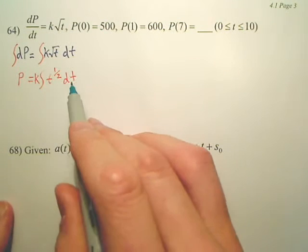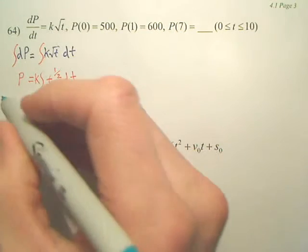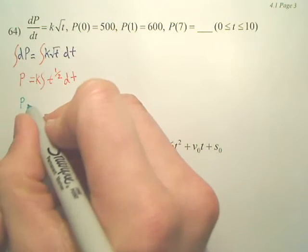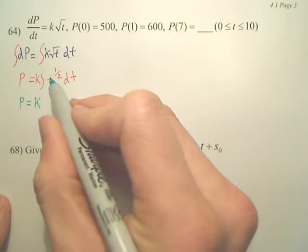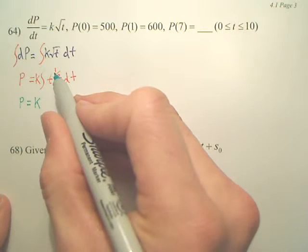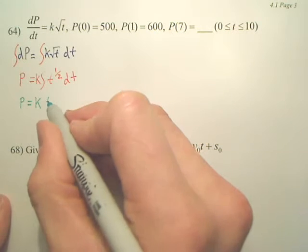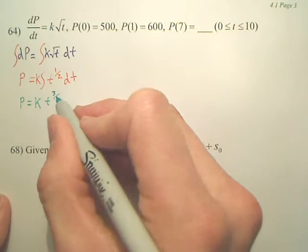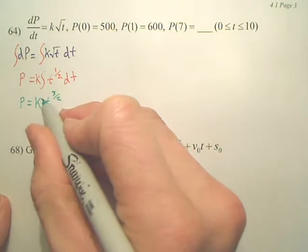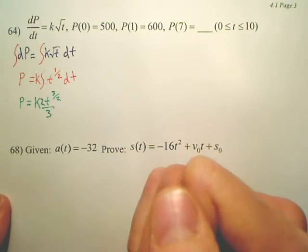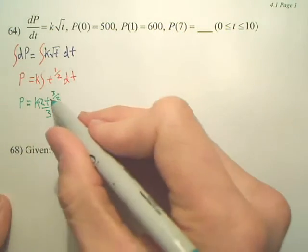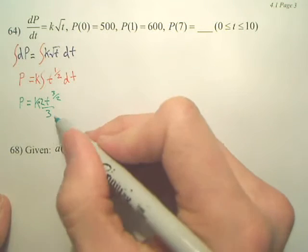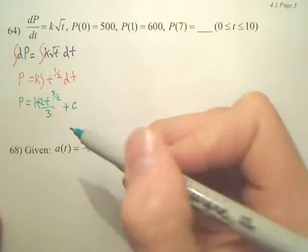Yeah. So P is going to be k, and the integral of t to the 1 half will add 1 to 1 half, you get 3 half, divide by that, you get—I might have threw some of you for a loop. Because when you divide by 3 over 2, you get 2 thirds, and then you have plus c.